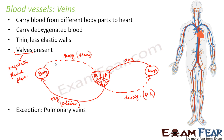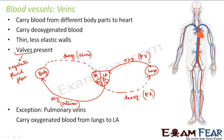There is an exception for veins too — the pulmonary vein. All veins carry deoxygenated blood, but the pulmonary vein carries oxygenated blood from the lungs to the left auricle. So to summarize: arteries are blood vessels that carry oxygenated blood — exception is the pulmonary artery which carries deoxygenated blood. Similarly, veins carry deoxygenated blood — exception is the pulmonary vein which carries oxygenated blood.